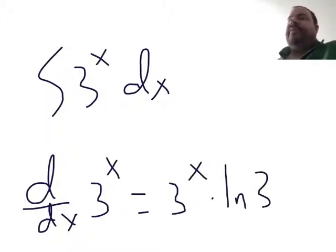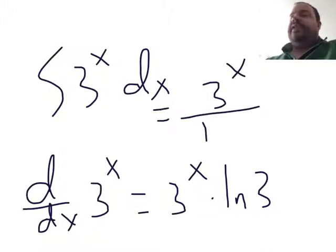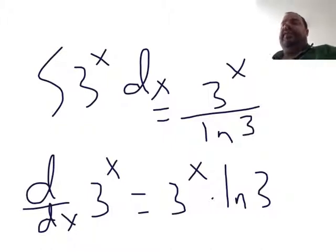So we want to do the opposite of that when we take the anti-derivative, so it's going to be 3 to the x over ln of 3. And this is true for any base. We're just going to multiply by ln of that base for differentiation, and divide by ln of that base for anti-differentiation.